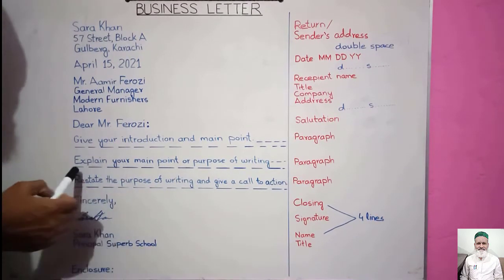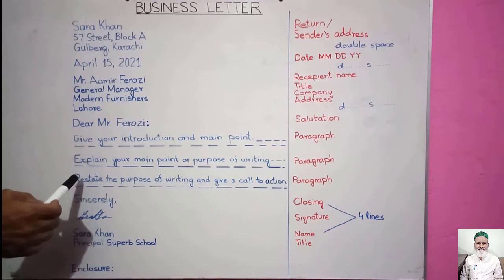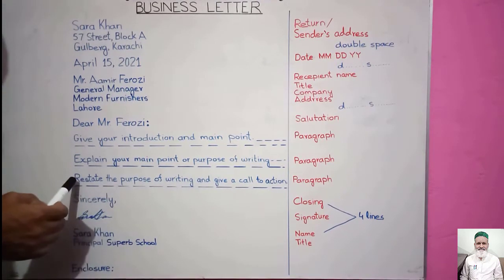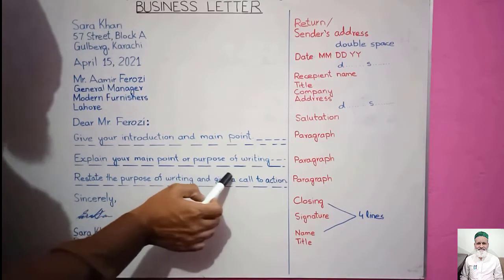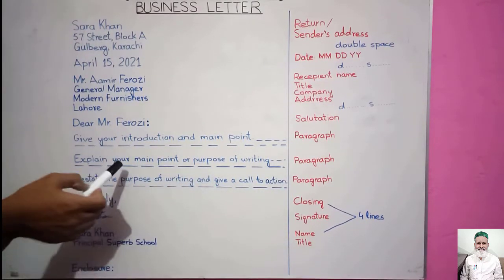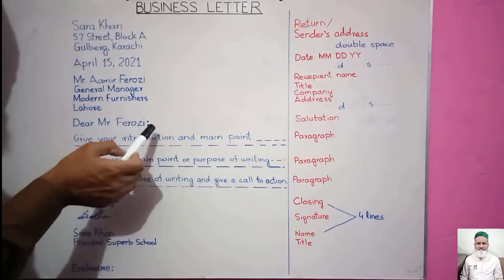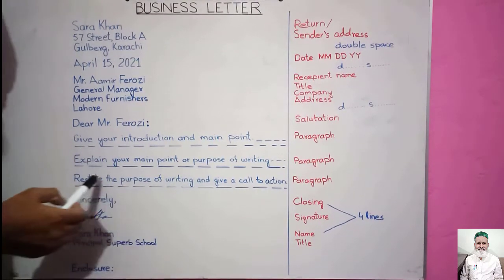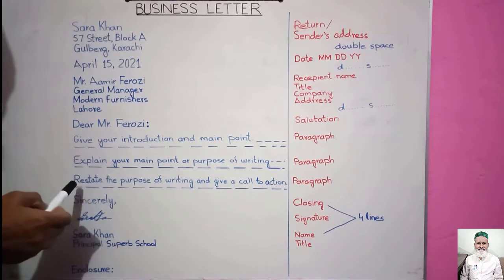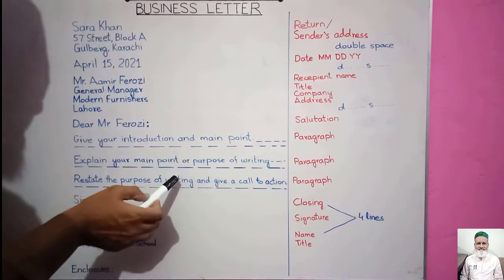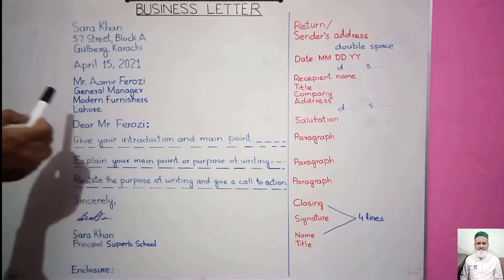Again we put double spacing — leave one line — and then comes paragraph number three. In the third paragraph, restate the purpose of writing and give a call to action: what do you want, why did you write this letter, what is your purpose? We briefly restate it. In the third paragraph we restate the purpose of writing and give a call to action to the recipient.